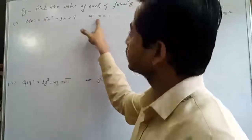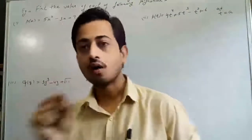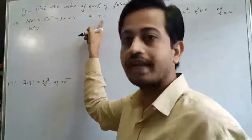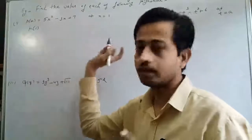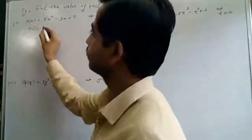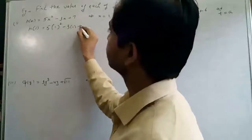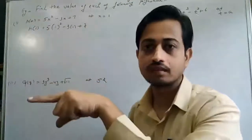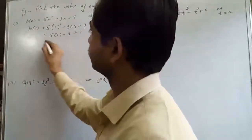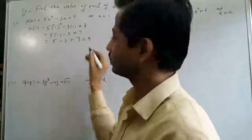We have to calculate the polynomial at x=1. We have to put x=1 in the whole polynomial and get the solution, so P(1). Where we find x, we replace it by 1. So 5 into 1 squared minus 3 into 1 plus 7. Square of 1 is 1, so 5 into 1 is 5, minus 3 plus 7. 7 plus 5 is 12, and 12 minus 3 equals 9. This is your final answer.